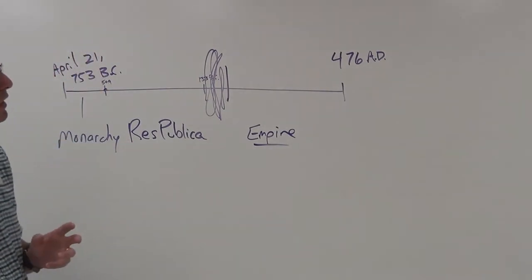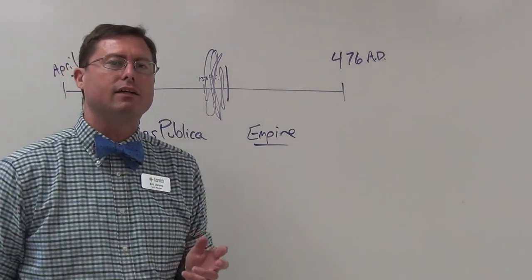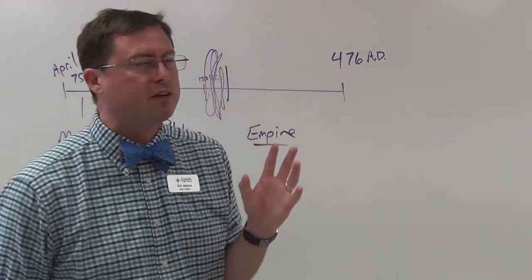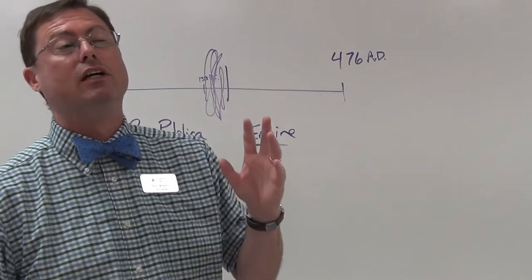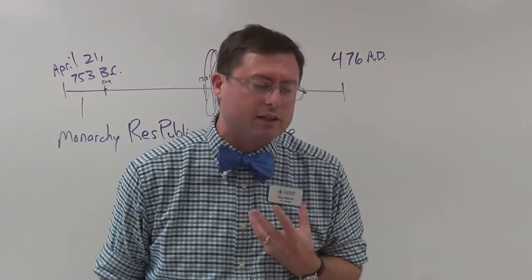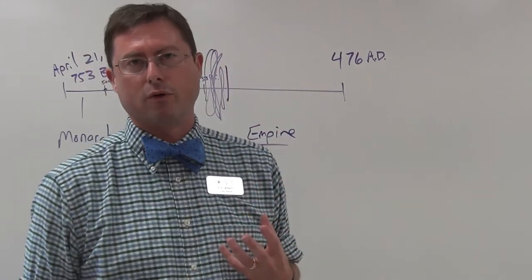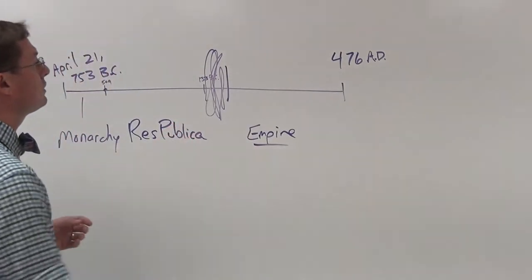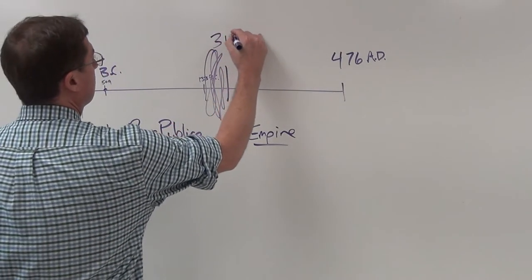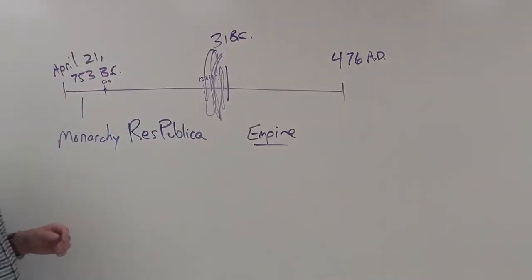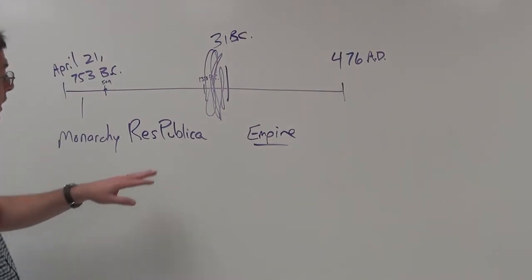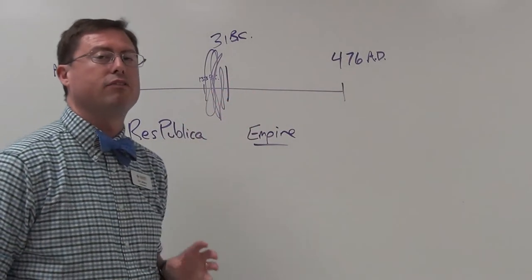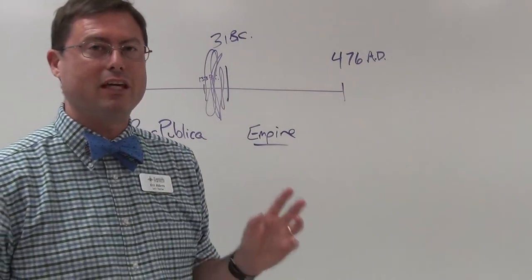It is important to know that always hanging over the head of this family, as well as every other family — even senatorial families like ours — is essentially the ultimate authority of all of Rome, which is the emperor. But for a long, long time, for over 700 years, they had no emperor in Rome. Instead, it was the Res Publica. But moving forward, our family is living during the time of the emperors.